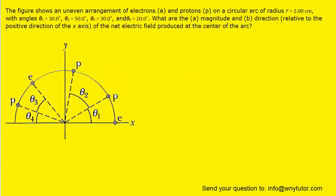If you haven't done so yet, please pause the video and try to answer the question on your own before listening on. To begin this problem, we can label each charge with a letter just to help us keep track of them. So let's call this first charge A, and then B, and then so on around the ring.